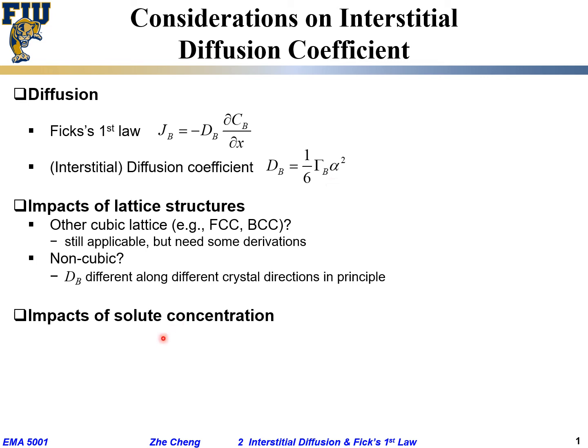There are some other impacts on this diffusion coefficient. One thing would be solute concentration. The interstitial atom is also called a solute within a solution. What people find is, if the concentration range is small, we can assume D is constant.